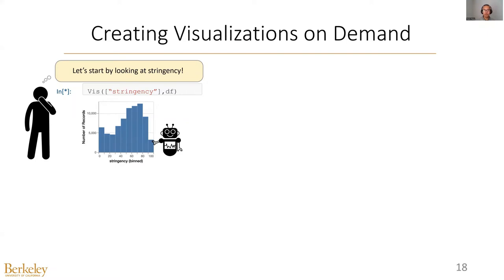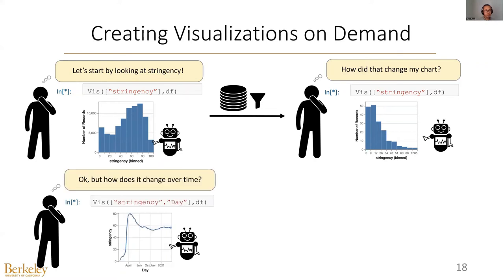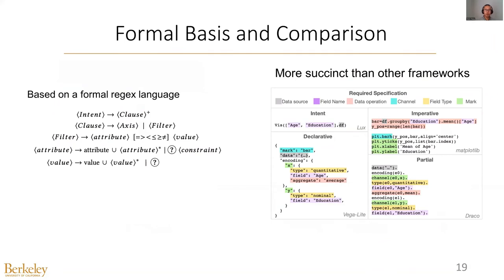For example, a user interested in the distribution of the attribute stringency can, after filtering some data, create a visualization on the same attribute and compare the two visualizations based on different datasets. In addition, they are able to visualize the relationship between stringency and another attribute, and also visualize stringency against any other attributes, represented as a question mark. We have formalized our intent language. Compared to other frameworks, our intent language is more succinct and allows users to think at the level of data rather than worrying about visualization details.